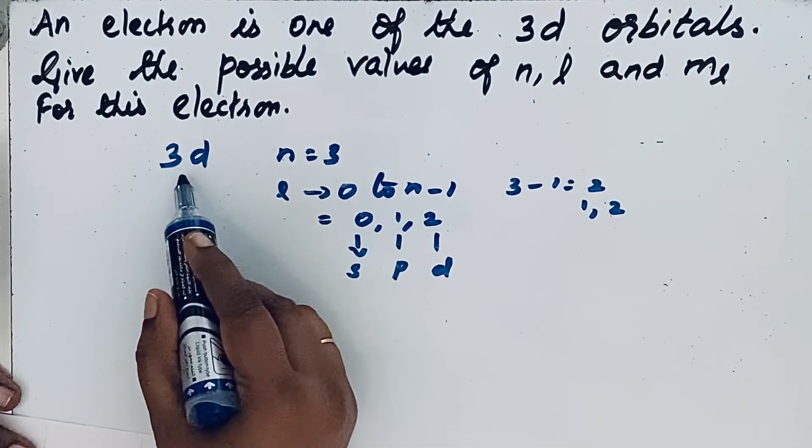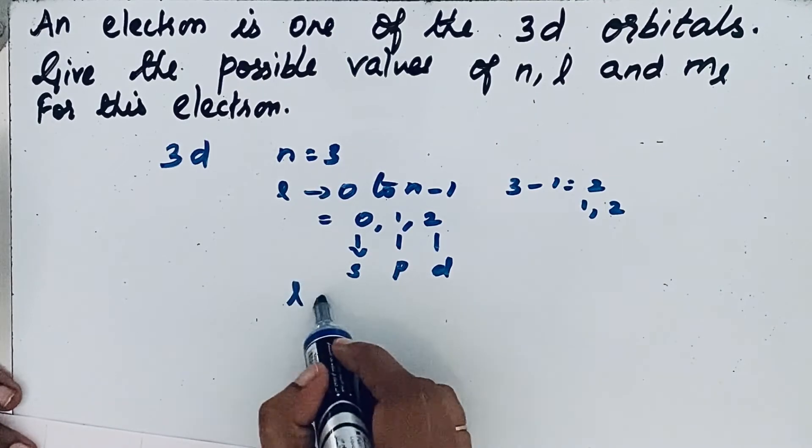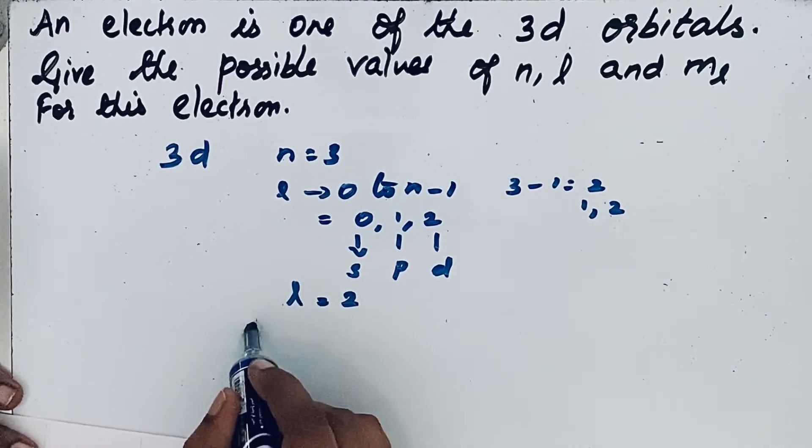So we want that answer for 3d orbital. So for 3d orbital, l equals 2. Now let us come to ml.